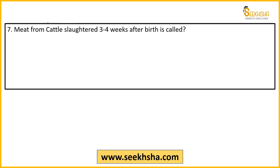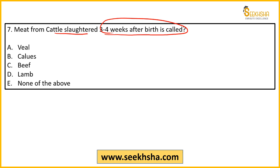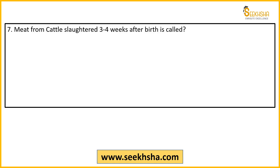Seventh question: Meat from cattle slaughtered 3 to 4 weeks after birth — what is this meat called? This meat has a specific term. Options: A) Veal, B) Calus, C) Beef, D) Lamb, E) None of the above.